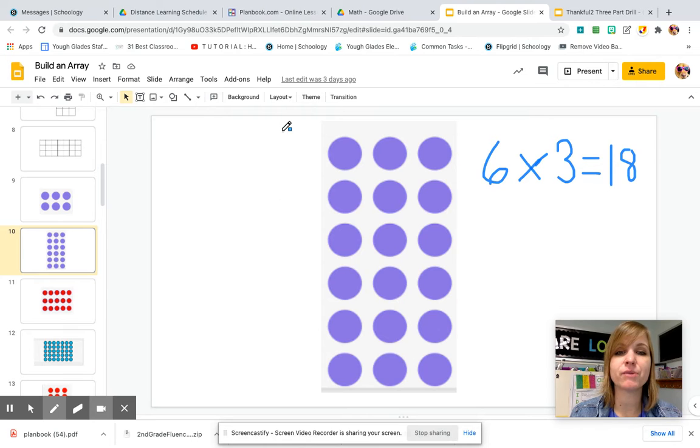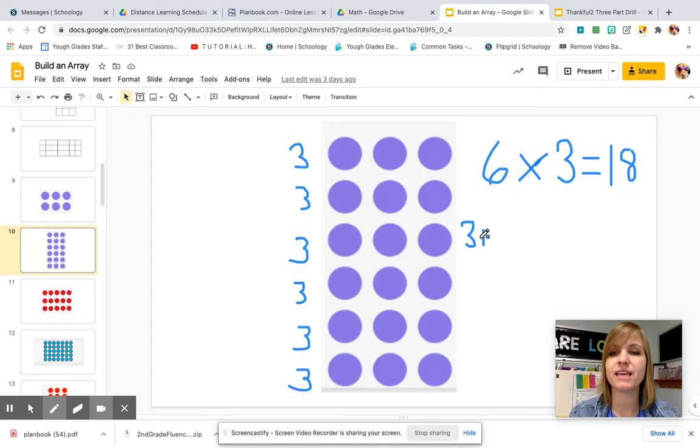As you can see here in the array, I have six rows of three. I'm going to label the rows as such.